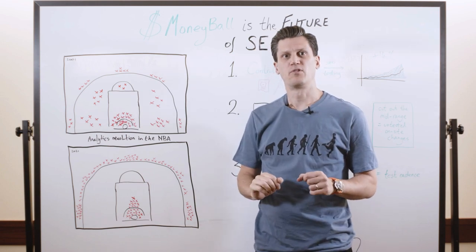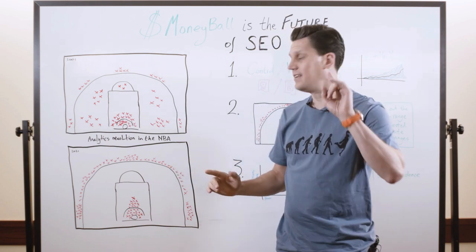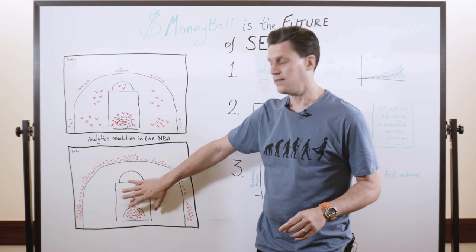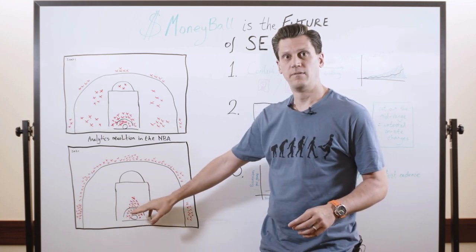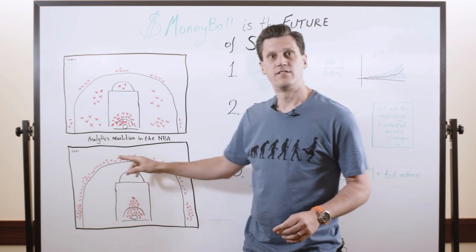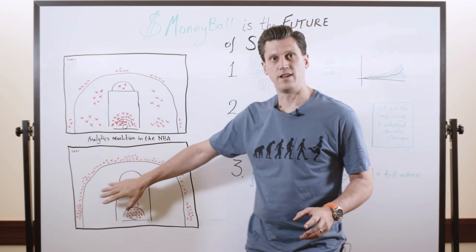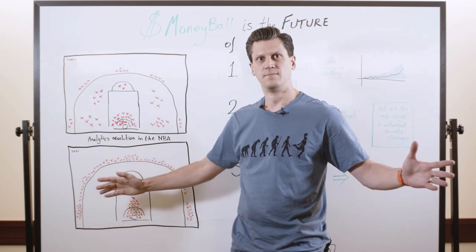Something happened in the subsequent 20 years because today the shot chart looks more like this. It's pretty mind-blowing. You can see there's still a ton of dunks and layups, still a ton of three-point shots, but the mid-range has all but disappeared. Why is that?